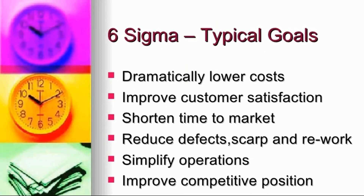Typical goals of Six Sigma: once implemented, it would dramatically lower costs. If defect opportunities are very low, scrape and rework are very low, and there will definitely be lower costs. It also improves customer satisfaction — the customer is king — meaning your business would be more successful. Additionally, it shortens time to market and reduces defects, scrape, and rework across all operations.